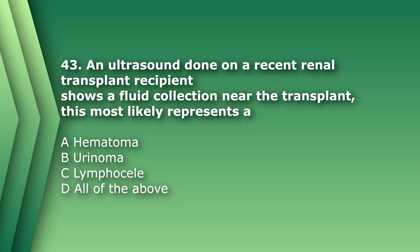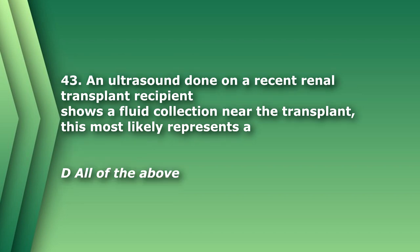Number 43. An ultrasound done on a recent renal transplant recipient shows a fluid collection near the transplant. This most likely represents: A. Hematoma. B. Urinoma. C. Lymphocele. D. All of the above. The answer is D, all of the above. An acute hematoma can be seen as anechoic and start to develop low-level echoes as the blood begins to clot. A urinoma is usually anechoic. And a lymphocele is usually anechoic with septations.